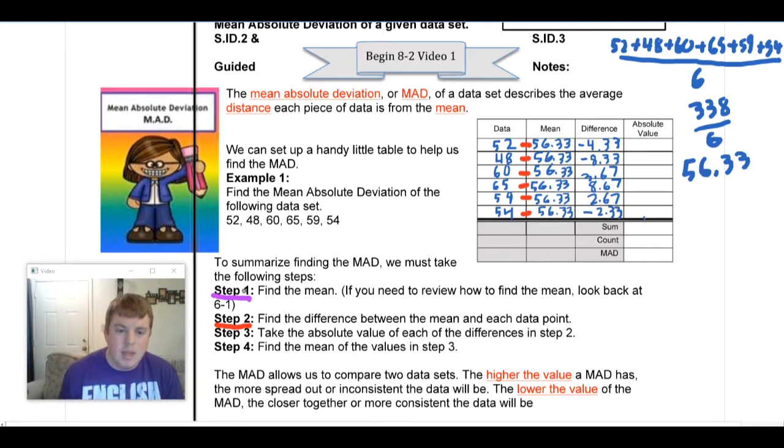Alright, our step three is going to be to take the absolute value of our data set. So that means we're going to just take our value that we got in the difference column that we just got—the negative 4.33, the negative 8.33, and so forth—and we're going to make sure that those are all positive values. Because what the absolute value actually tells us is the true distance away from zero. So if you think about distance, we're always talking about distance in terms of positive. So what the absolute value does is it gets rid of all the negatives for us. If it was positive, it's going to stay exactly the same. And if it's negative, it's going to become positive.